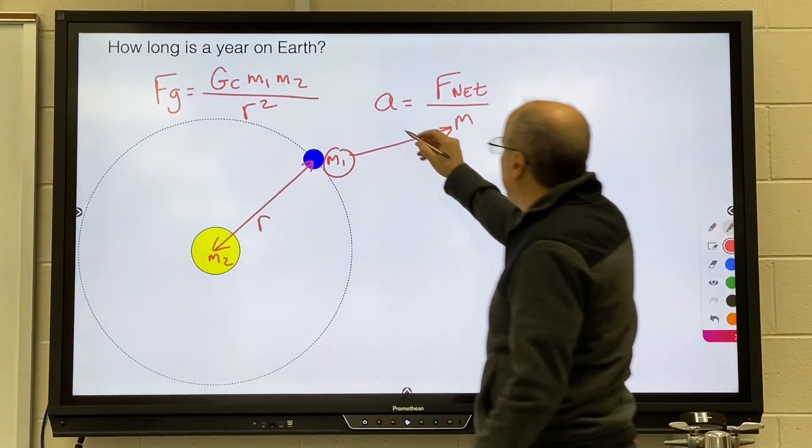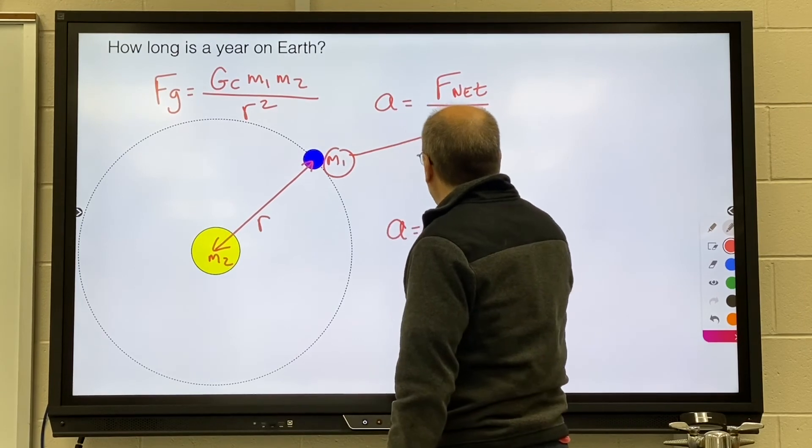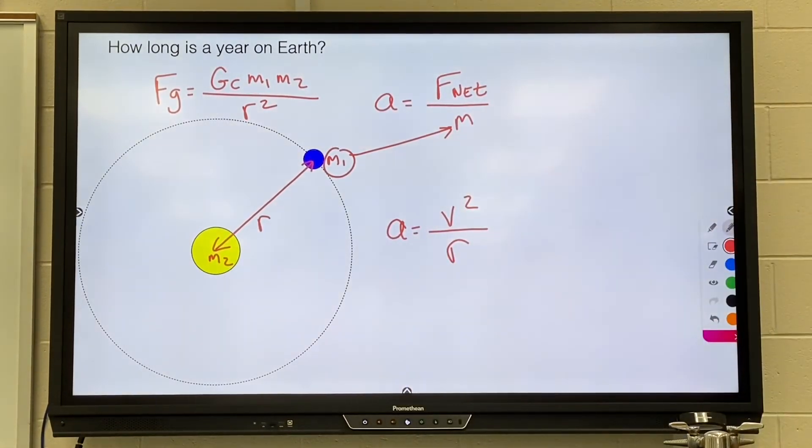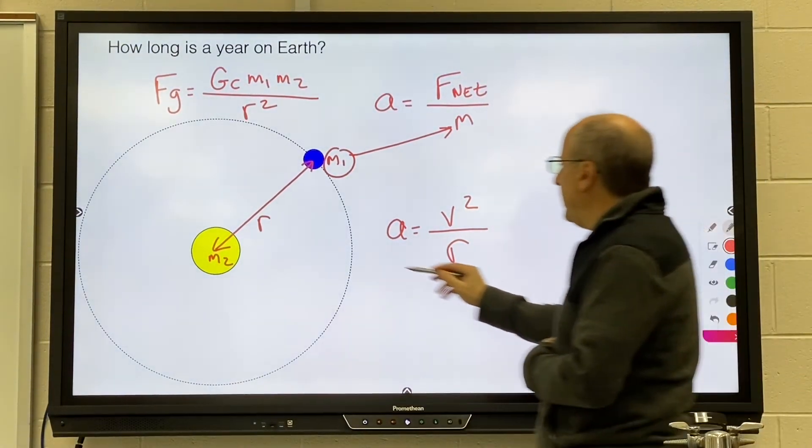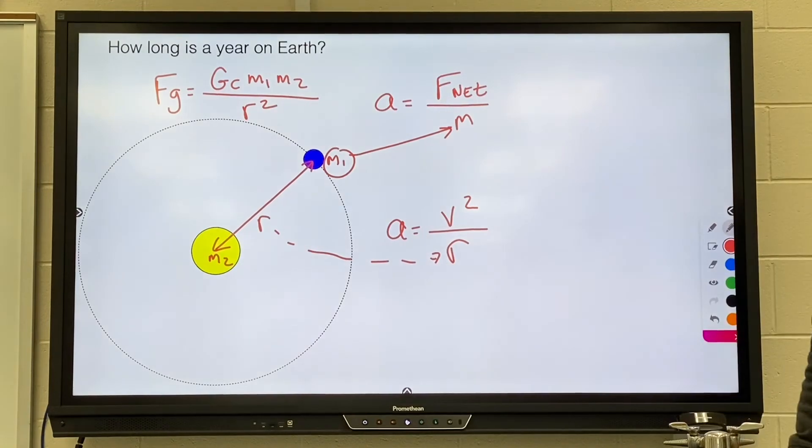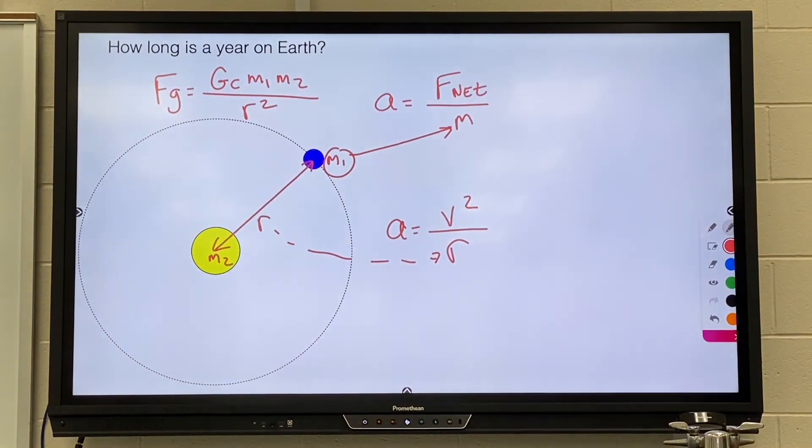Once you get your acceleration, plug it into the circular acceleration formula. And again, the radius you're using is the same radius we had before, the radius of the orbit, the distance from the sun to the Earth.